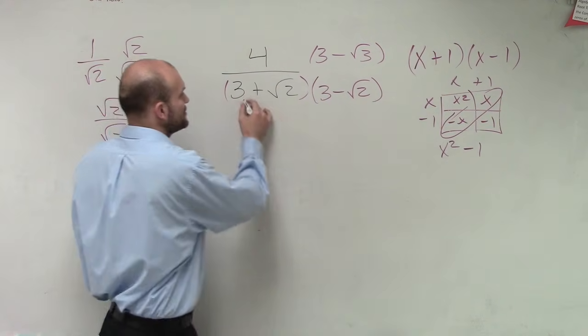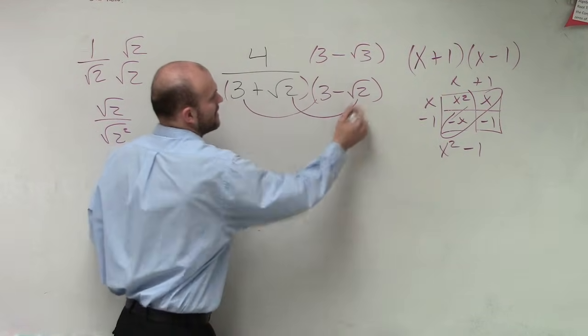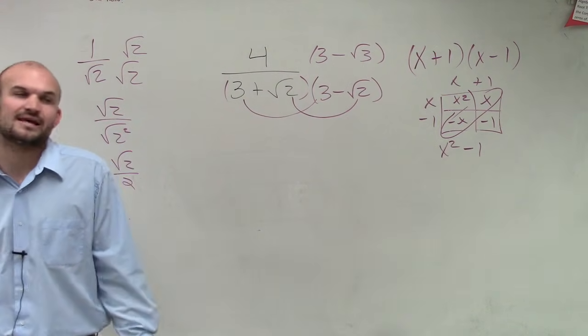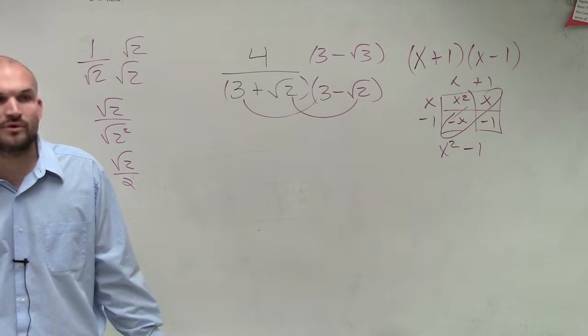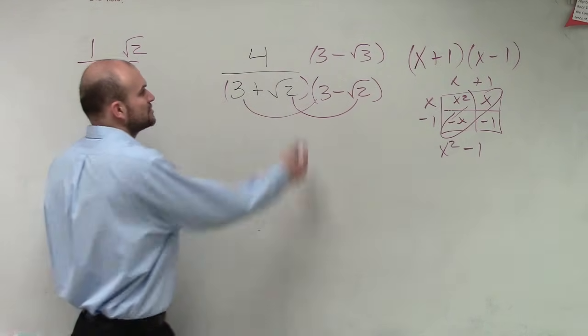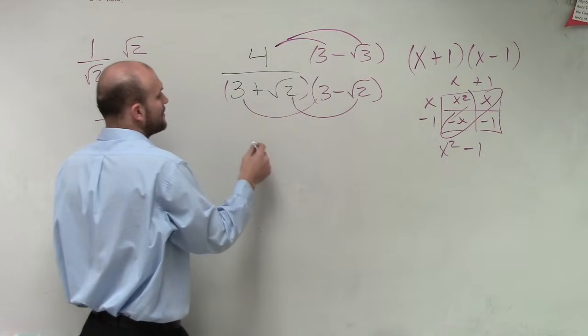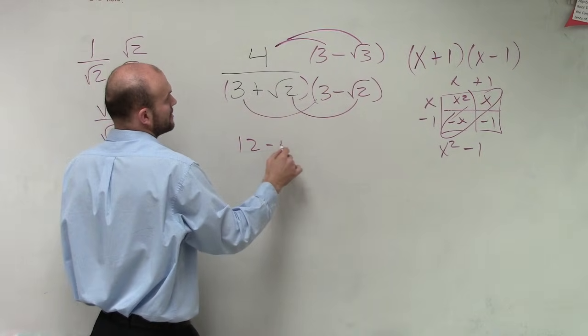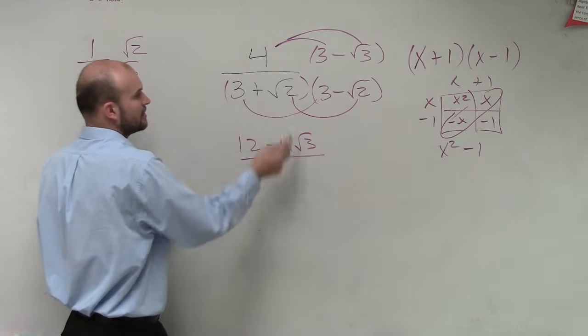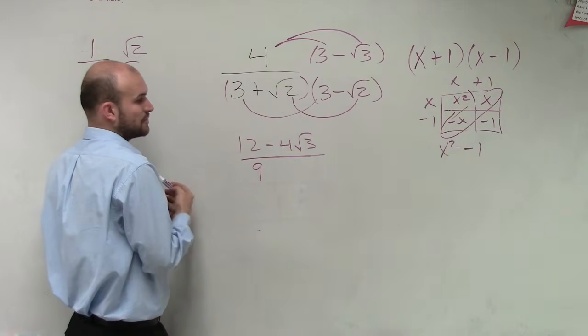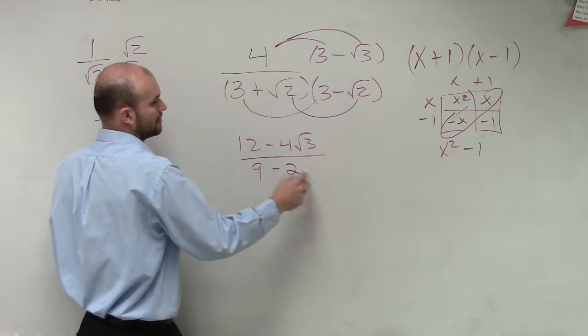So now, all I have to do is multiply my first 2 terms and my last 2 terms because then what that's going to do is I don't have to worry about my middle terms because it's a difference of 2 squares. So I distribute the top, which I get 12 minus 4, square root of 2. Then I divide it by 3 times 3 is 9. Square root of 2 times negative square root of 2 is going to be a negative 2.